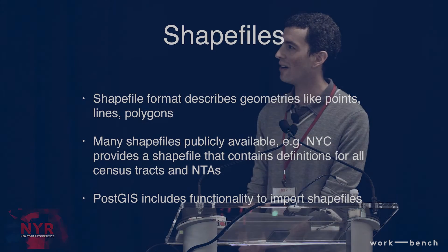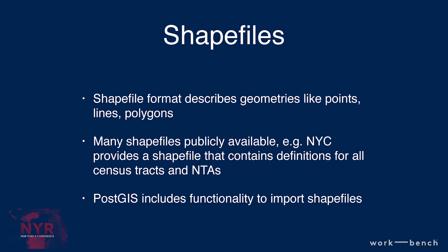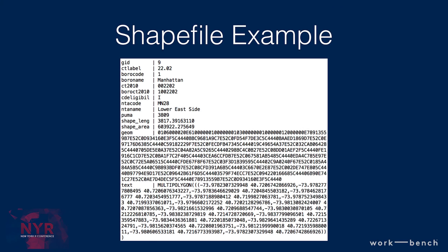A shapefile is just a file format that can represent geometries like points, lines, and polygons. Crucially, you can download many of them publicly on the internet — New York City has a shapefile with all census tract definitions on their website. I downloaded that and imported it into PostGIS. You end up with something like this: a single record for a single census tract, with a bunch of latitude-longitude coordinates defining the polygon boundary, which is on the Lower East Side. There are 2,000 of these.